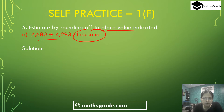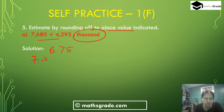When we round any number to the nearest thousand, first look at the hundreds digit. In 7,680, the hundreds digit is 6, and 6 is more than 5. So we add 1 to the thousands digit. The thousands digit is 7, so 7 changes to 7 plus 1, which equals 8.